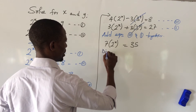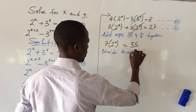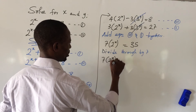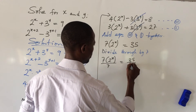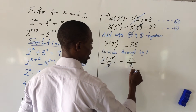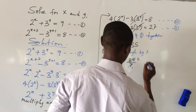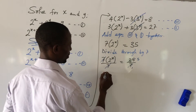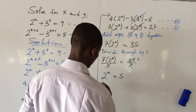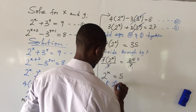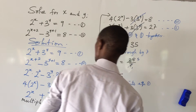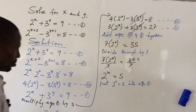We now divide both sides by 7. So we have: 7 times (2 to the power of x) divided by 7 equals 35 divided by 7. The 7s cancel, leaving us with 2 to the power of x equals 5. Now we substitute 2 to the power of x equals 5 back into equation one.